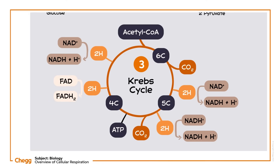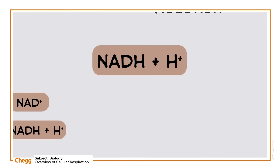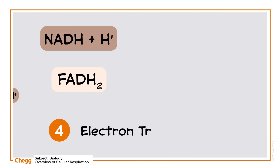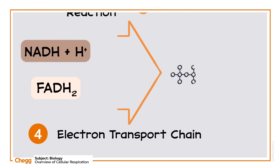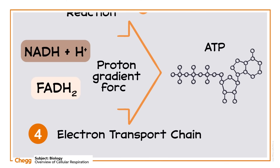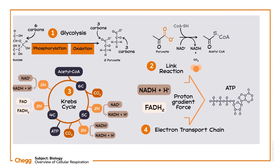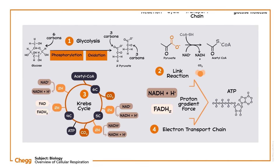And now we get to the juicy part. The energy precursors produced in the last phase, such as NADH and FADH, enter the electron transport chain. They're converted into ATP molecules by a series of oxidation and reduction reactions that occur with the help of a proton gradient force formed during earlier reactions. The electron transport chain occurs on the inner membrane of the mitochondria, and this involves oxidative phosphorylation and chemiosmosis. At this point, ATP molecules are generated from the precursors against the proton gradient.